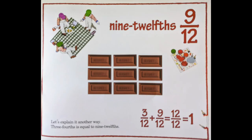Nine twelfths. Three fourths — let's explain it another way. Three fourths is equal to nine twelfths.